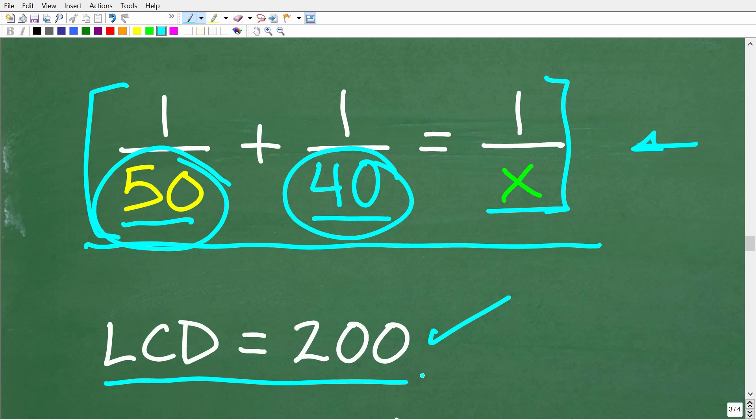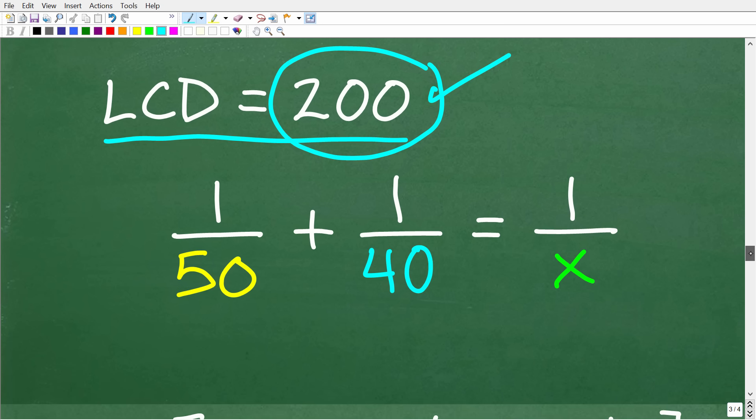So, that is going to be our first step. Now, of course, you have to know how to find the lowest common denominator. So, between 50 or given 50 and 40, the LCD is 200. So, we're going to multiply the entire equation by 200 as our first step.